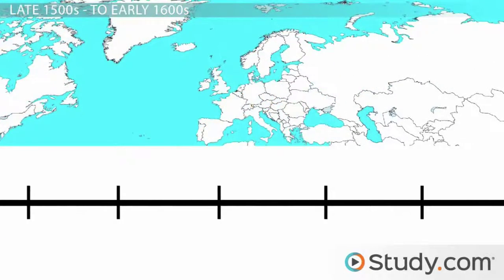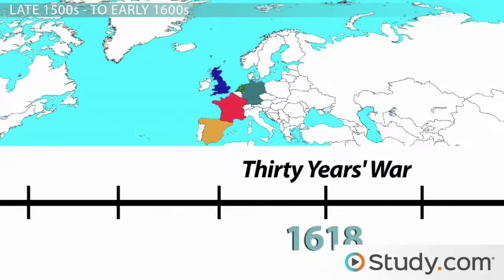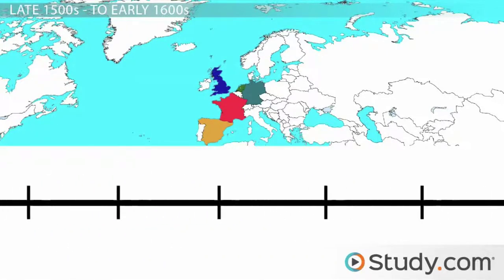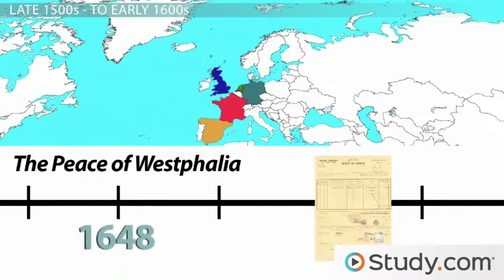Just when things seemed like they couldn't get more upside down and sideways on the continent of Europe, along comes the Thirty Years' War of 1618 — one of the most damaging conflicts in European history — in which most of Central Europe became engulfed in a battle which began as Catholic versus Protestant, but soon degraded into a race for European preeminence. And this brings us to our last timeline entry, the Peace of Westphalia, a series of several treaties finally ratified in 1648, bringing an end to both the Eighty and Thirty Years' Wars of Europe.